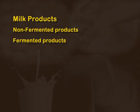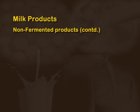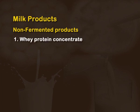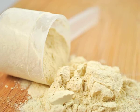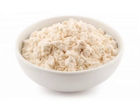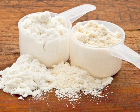Milk products are divided into two categories: non-fermented and fermented milk products. Starting with non-fermented milk products, the first is whey protein concentrate, which is separated from milk through the process of ultrafiltration. It has very high biological value and protein efficiency ratio. It is separated from milk in concentrations of 20 to 80 percent and is used for adding to various products to increase their biological and protein value.